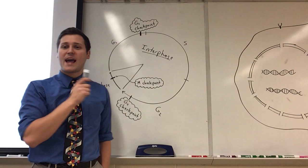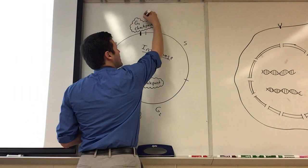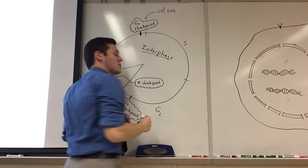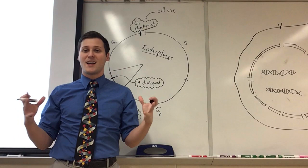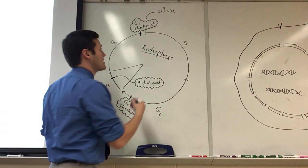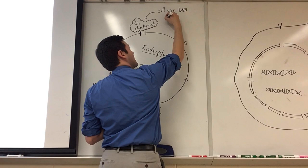So if we look at what happens during each of these checkpoints, the G1 checkpoint checks for things like cell size. So during G1, the G1 phase, we should see that the cell grows in size so the G1 checkpoint just makes sure that it actually did that. It actually grew in size. We also check for DNA damage.